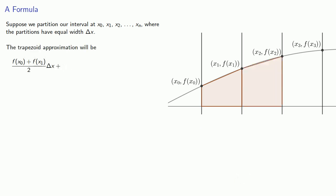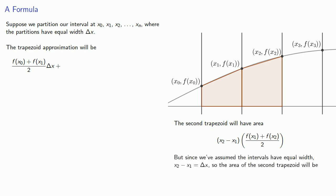Similarly, the second trapezoid will have area... And again, since we've assumed that the intervals have equal width, the area of the second trapezoid will be...